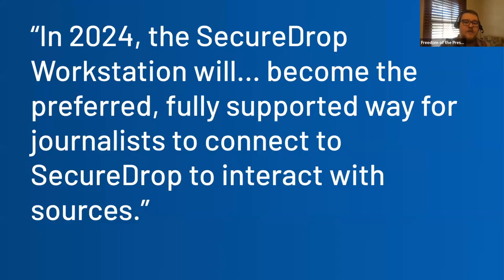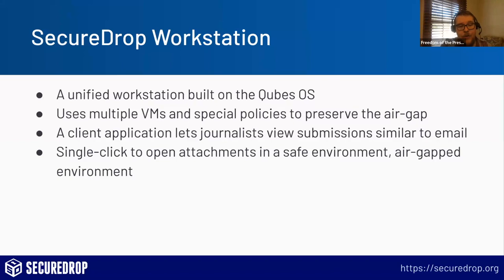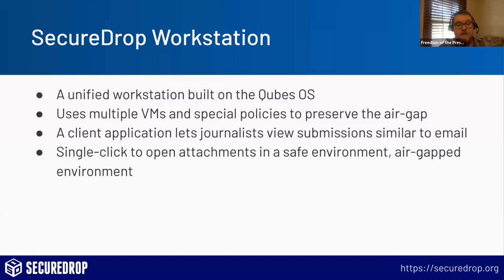In 2024, the SecureDrop Workstation will become the preferred, fully supported way for journalists to connect to SecureDrop and interact with sources. The SecureDrop Workstation is a unified workstation built on a special operating system called Qubes. It uses multiple virtual machines and policies to preserve the air gap — one computer running a bunch of smaller computers that talk to each other in special ways that emulate the air gap. This means there is a client application that lets journalists view submissions similar to email, with a list of submissions, and when you click one you instantly read the message, and with another click you can open attachments in a safe air-gapped environment.